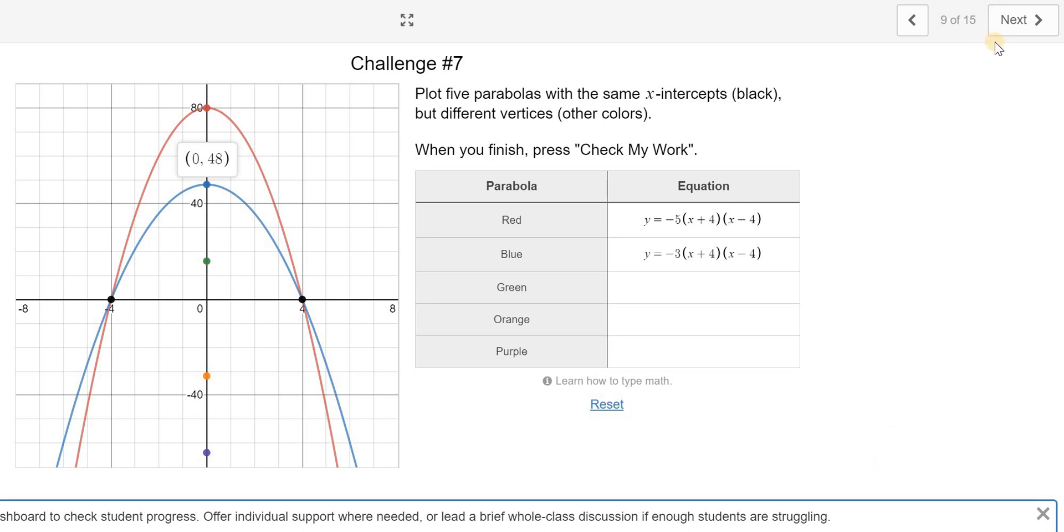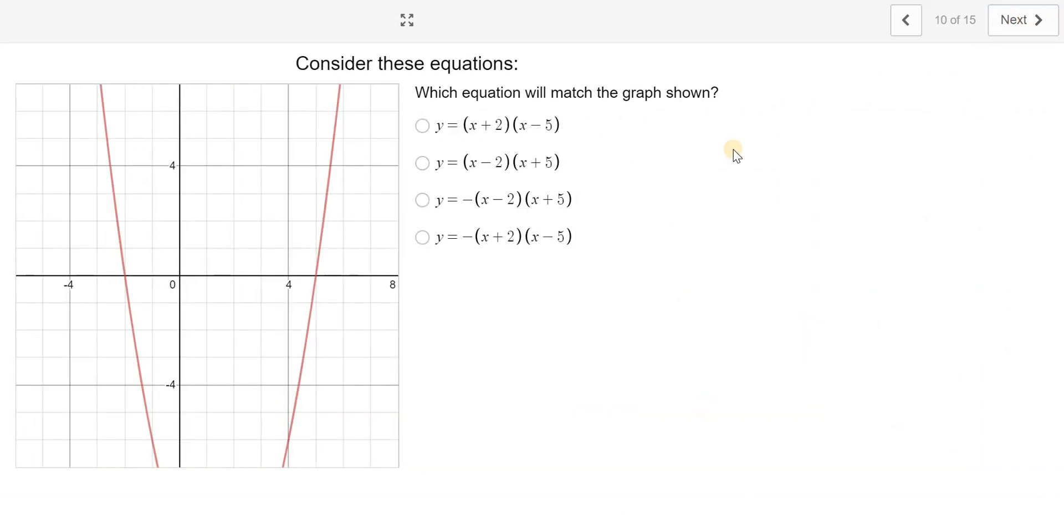And then the last slide that was requested to go through was slide 10. It says, which one will match the graph shown? And you notice that I have my two brackets. This is factored form, which you have learned how to do, but we haven't graphed them yet.